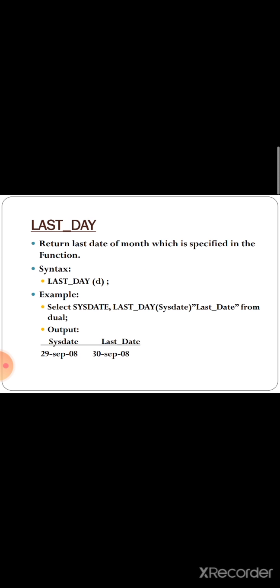The next function is LAST_DAY. It returns the last date of the month which is specified in the function. The syntax is LAST_DAY(d), where d is the given date. For example: SELECT SYSDATE, LAST_DAY(SYSDATE). The system date is 29 September 08, so the last date of that month is returned as 30 September 08.